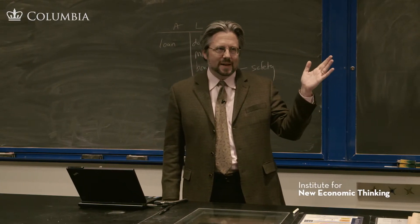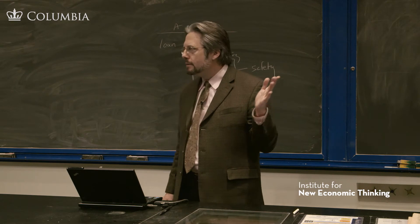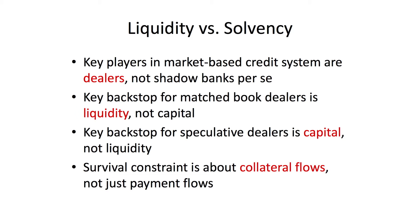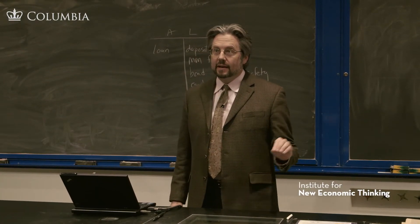Focus on liquidity for the matched book dealers and capital for the proprietary ones. If you try to put lots of capital requirements into a matched book dealer it may do no good — you need a liquidity backstop there. Liquidity kills you quick. The fourth idea, which I just added today or yesterday and I'm still thinking through, is that the survival constraint is not just about payment flows but also about collateral flows.